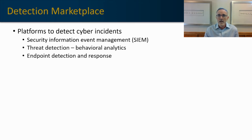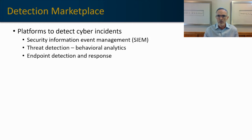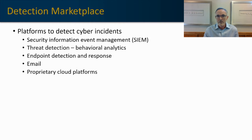The next is endpoint detection and response. This is an upgrade from your traditional antivirus, anti-malware, or even endpoint protection platform. Endpoint detection and response includes that behavioral analytics component that is not included in more traditional endpoint protection services. We also have a separate solution generally for email — things like Proofpoint and Mimecast. And then there are, of course, proprietary detection services available through specific cloud platforms.